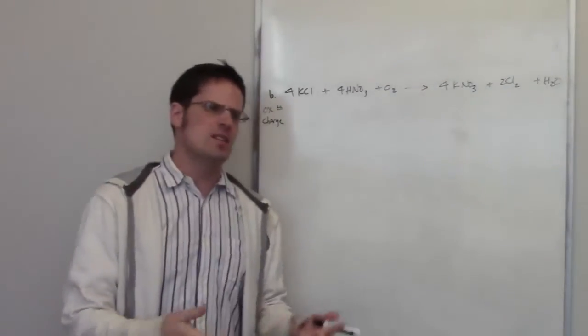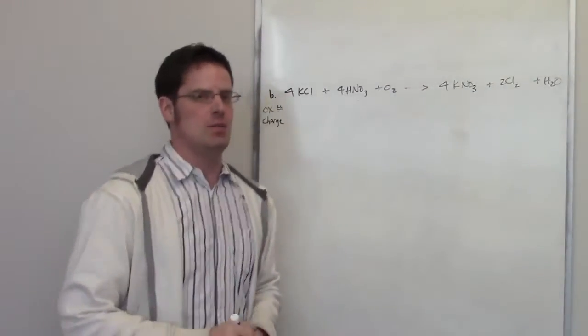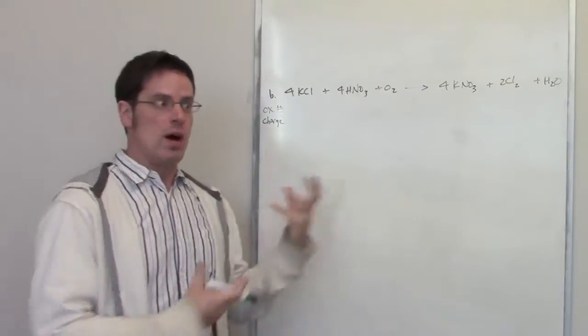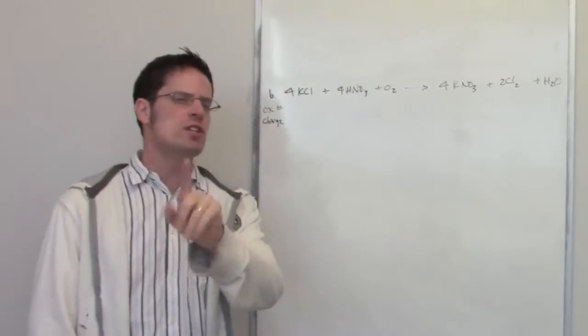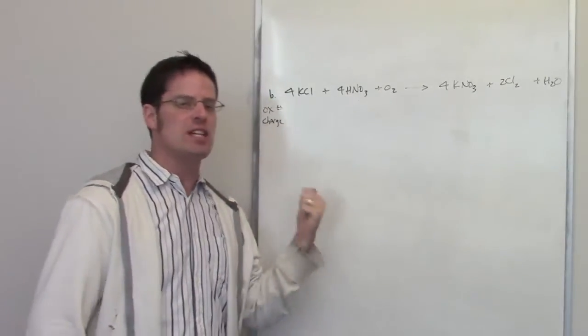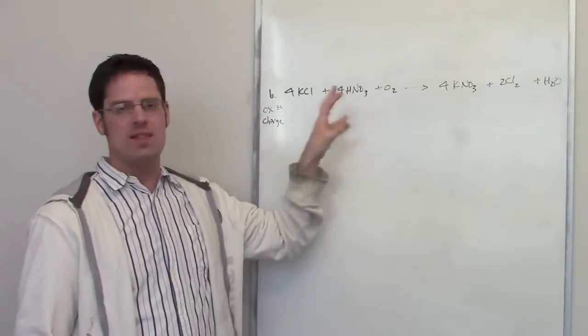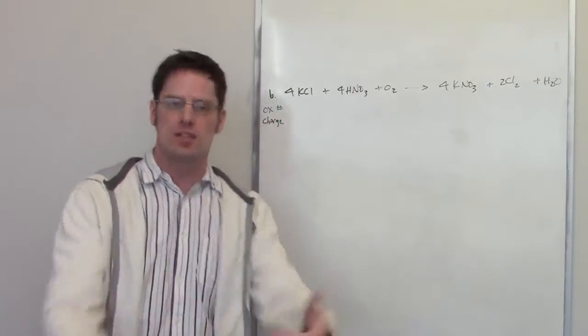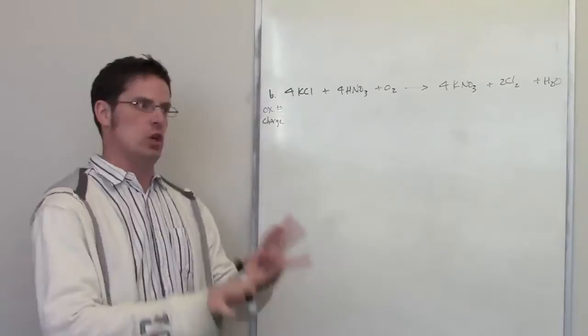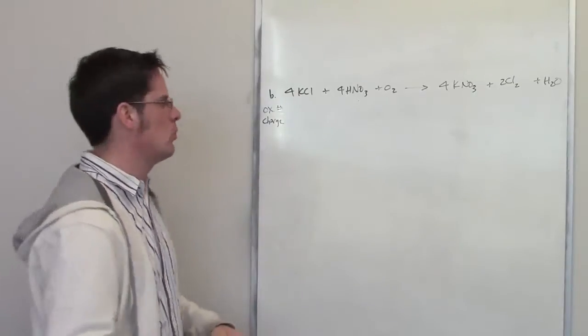I decided to pick this next one because it's also a fun, complicated one. We're asked to determine what's being oxidized, what's being reduced, and to do that we're going to start by assigning every single atom in this reaction an oxidation number. And then we look at who's changed from what to what.